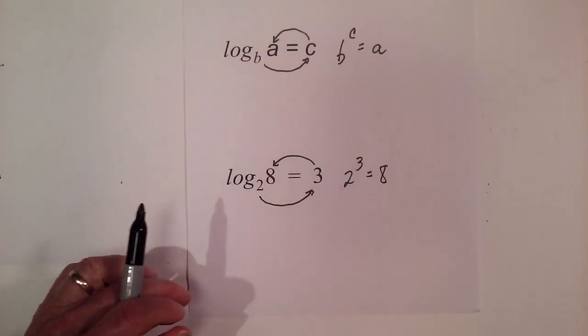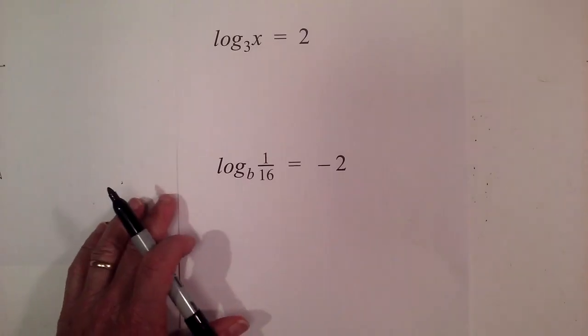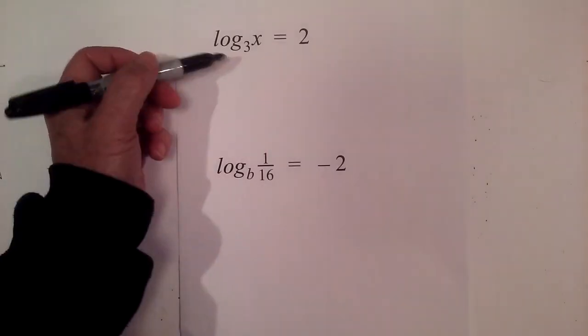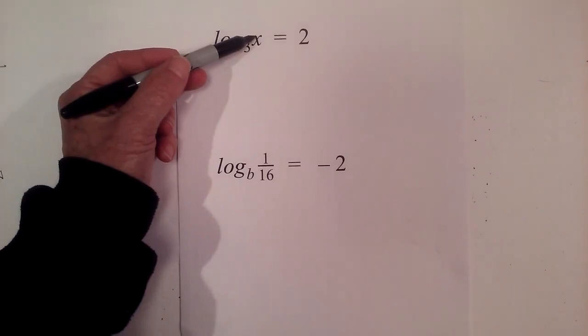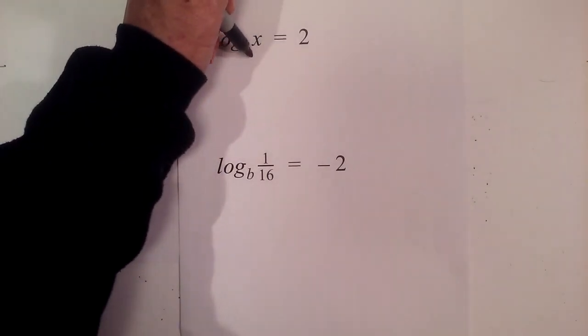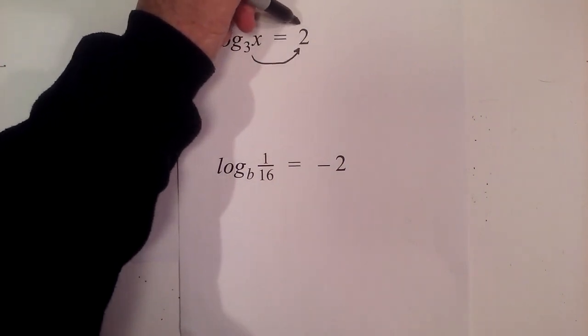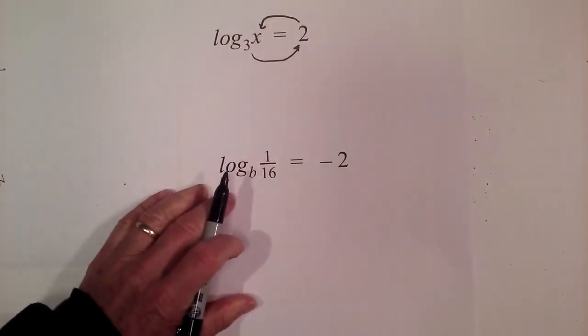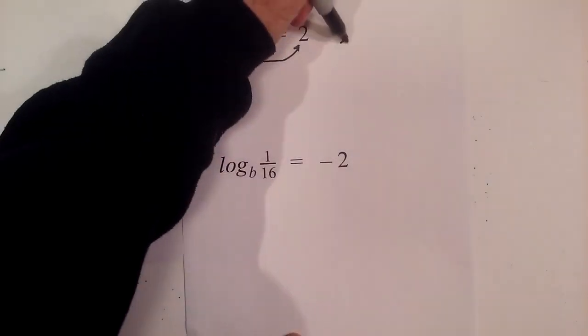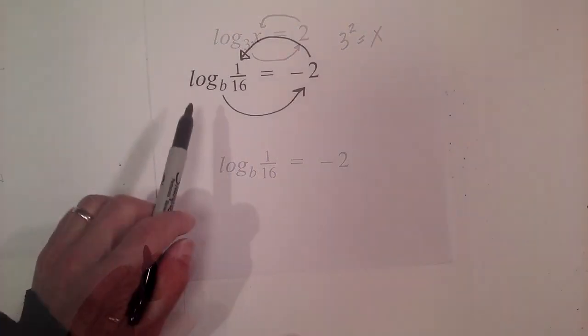And remember in this video I'm just rewriting them. So next let's look at a couple more. We have log base 3 of X equals 2. Again, I'll just draw this little circle. 3 raised to the second equals X, so I'll write this: 3^2 = X.